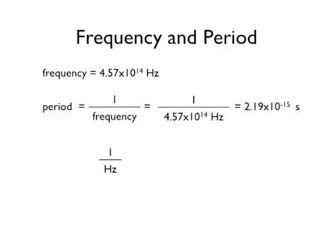Since a hertz is, by definition, per second, or 1 over seconds, the reciprocal of hertz is just seconds. So the period of this wave is 2.19 times 10 to the minus 15 seconds.